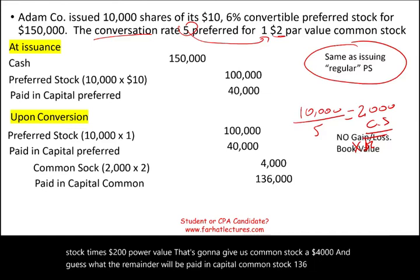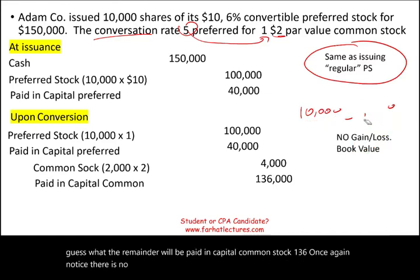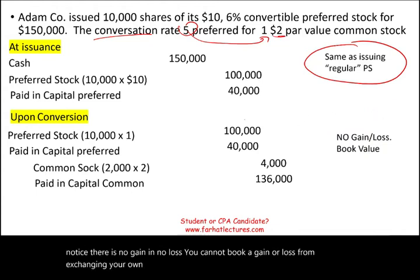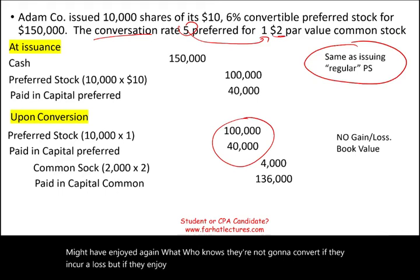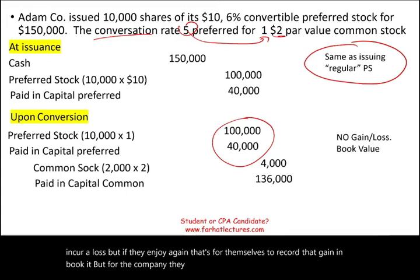Notice there is no gain and no loss. You cannot book a gain or a loss from exchanging your own stock. The holder of the preferred might have enjoyed a gain — they're not going to convert if they incur a loss — but that gain is for them to record. For the company, there cannot be a gain or a loss from exchanging their own stock.